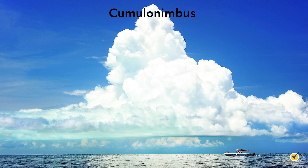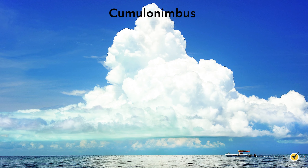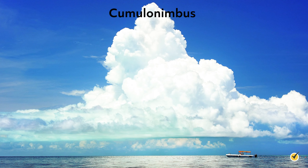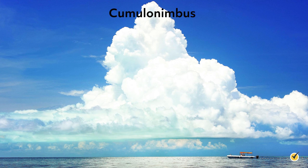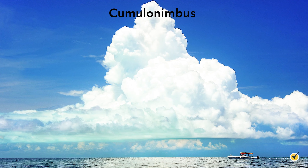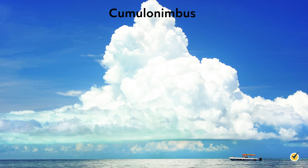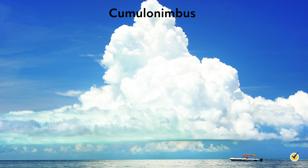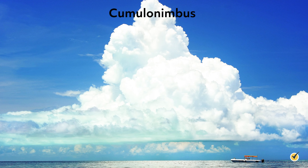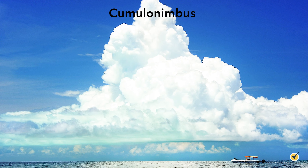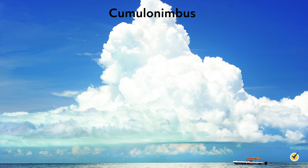Let's talk about the cumulonimbus, which I mentioned a little earlier. These clouds transverse all of the cloud layers, often reaching heights over 30,000 feet tall. They can contain all types of precipitation, especially rain and hail, and will often produce massive severe thunderstorms or tornadoes.